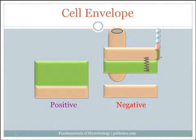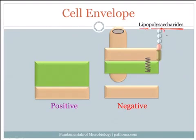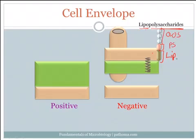A third and very important thing that gram-negatives have are lipopolysaccharides in their outer membrane. Breaking it down: 'lipo' means it's part lipid, and 'polysaccharide' means many sugars. There are three main components. On the outside are O-linked oligosaccharides — the way to remember they're on the outside is that both start with an O. In the middle is a core polysaccharide. On the innermost layer is lipid A — this is where we get the 'lipo' part of the word. Another very important name for lipid A is endotoxin — 'endo' is Latin for within, because this toxin is embedded within the outer membrane.